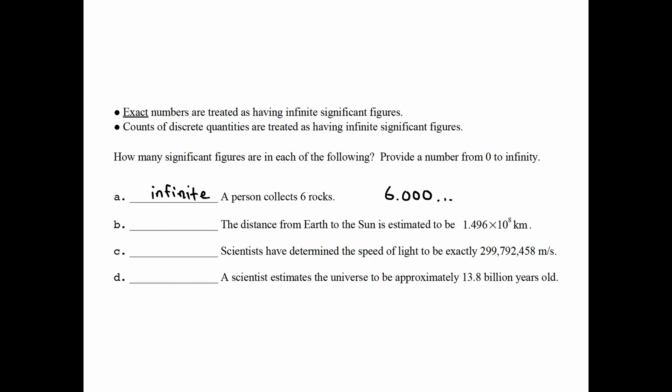The distance from Earth to Sun is estimated to be 1.496 times ten to the eighth kilometers. Is that a measurement or a count? Well, it is a measurement, or at least an estimate. So this has four significant figures.